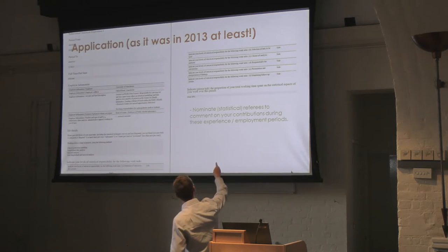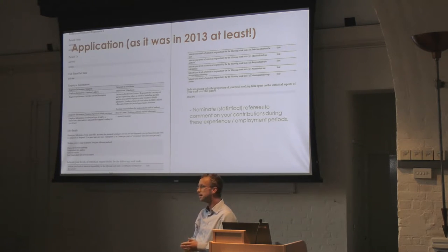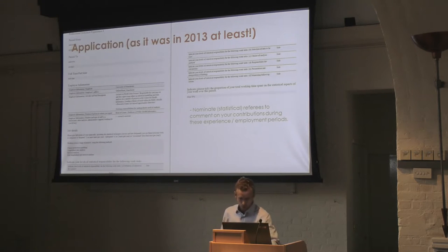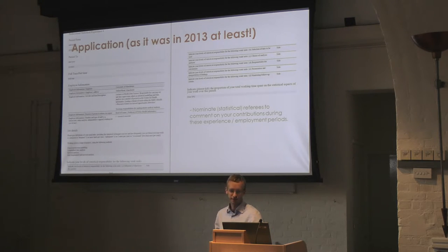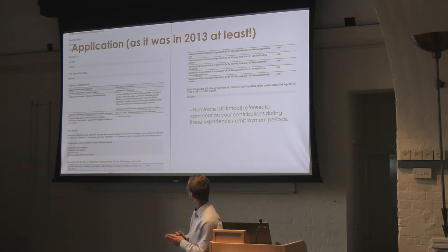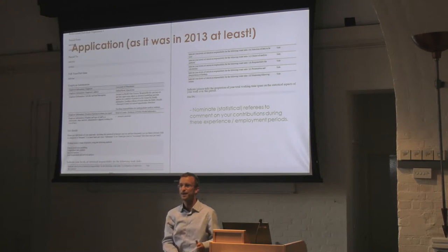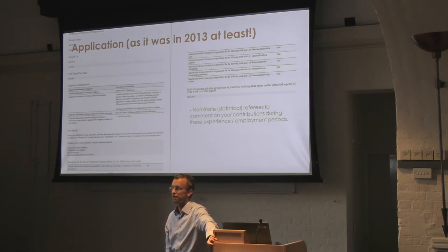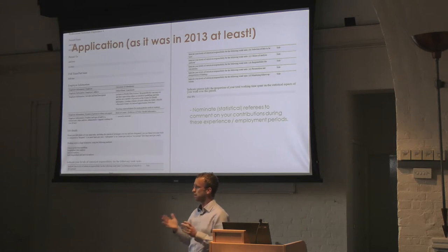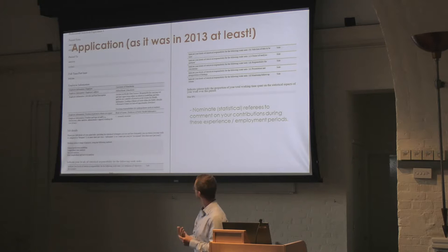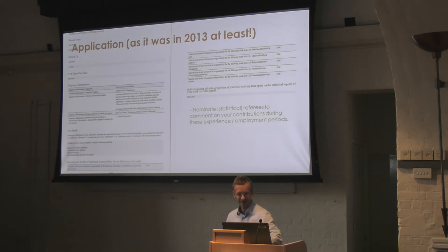I don't think there's an expectation that you need to have sole responsibility for everything after five years, because that depends on where you're working and the structure of your organisation. The main place the RSS gets information about your competency to back up your selections is from the referees you specify. At least two referees should cover the employment periods comprising the whole five-plus years you're using to demonstrate competency for CStat. So obviously, pick those referees wisely — as you always would when specifying referees. Where possible, they should be existing CStat holders, or at least statistically trained.